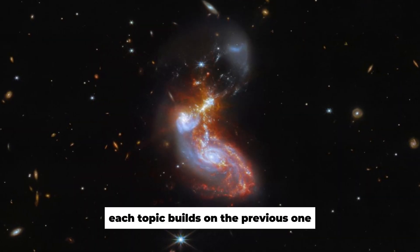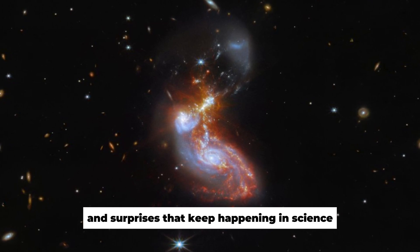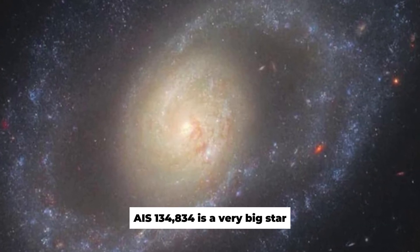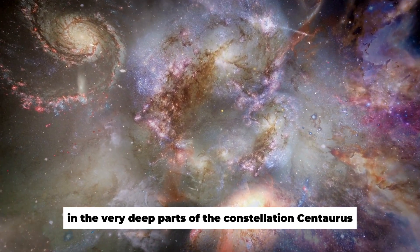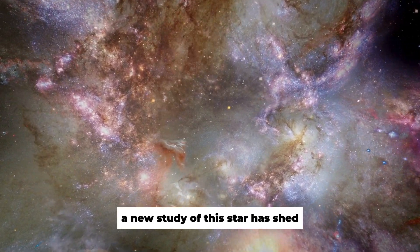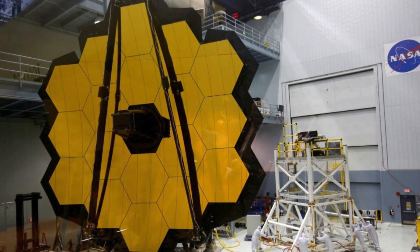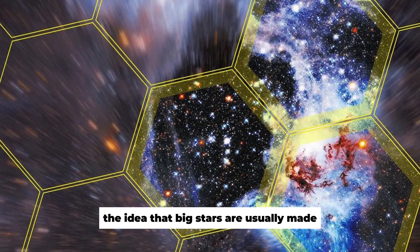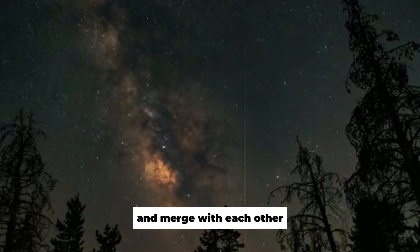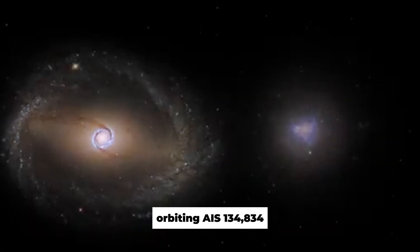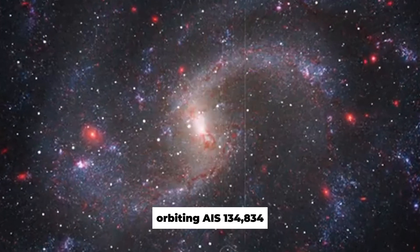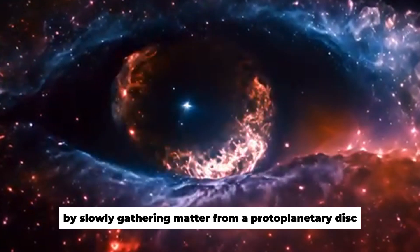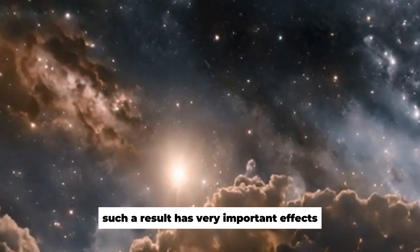Each topic builds on the previous one, focusing on the new discoveries and surprises that keep happening in science and make us question what we think we know. IRAS 13481-6124 is a very big star in the very deep parts of the constellation Centaurus. A new study of this star has shed new light on how complicated star formation is. This huge cosmic body, which is about 20 times the mass of our Sun, has called into question the idea that big stars are usually made when smaller stars crash into and merge with each other. Instead, the finding of a large disk of gas and dust orbiting IRAS 13481-6124 suggests that even the biggest stars might form in the same way that smaller stars do, by slowly gathering matter from a protoplanetary disk. Such a result has very important effects.